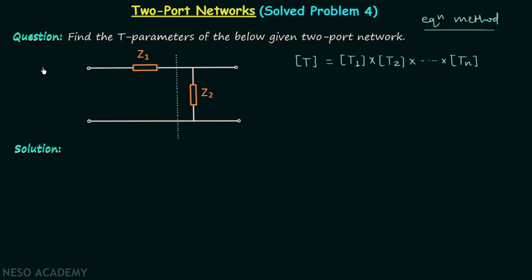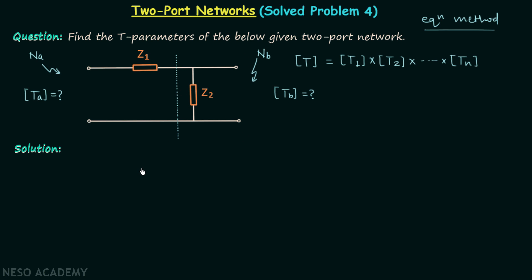This is our first network and we will call it network NA. This is our second network and we will call it network NB, and you can see that network NA is connected in cascade with network NB. We know that the T parameters matrix of the overall network is equal to the product of the T parameters matrices of the individual networks connected in cascade.